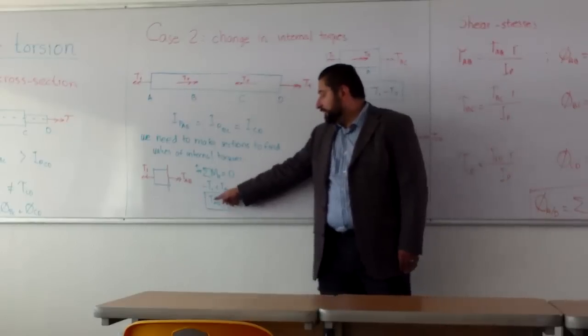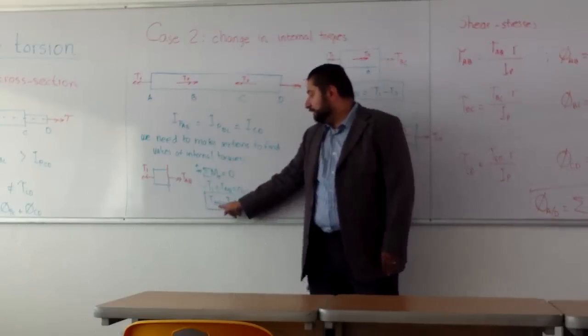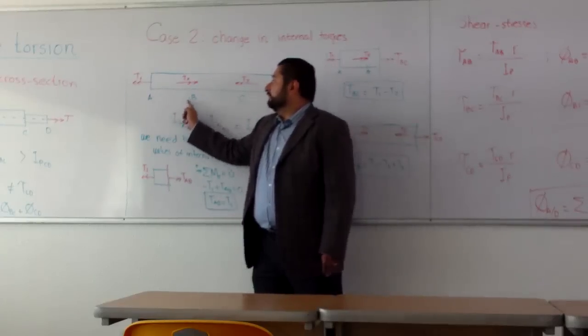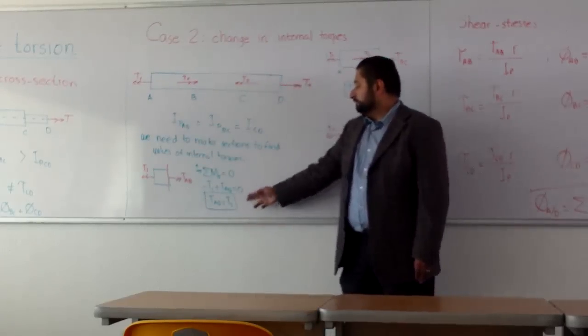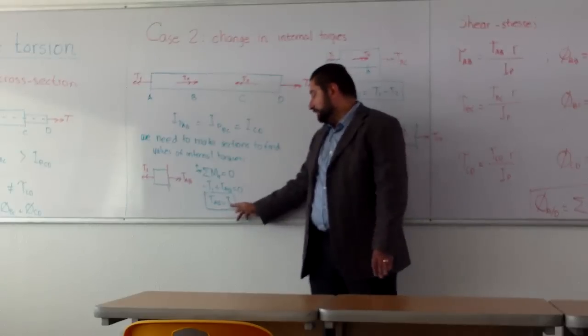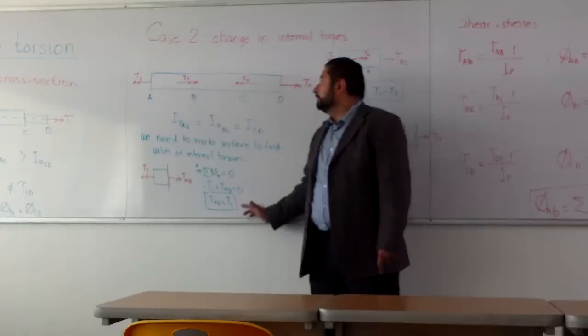I make sum of the torques and I get the value of the internal torque in this section of the bar, AB. And in this case, but in this case only, is equal to T1.